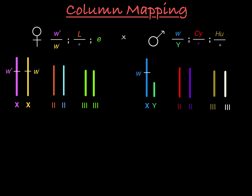We'll start by drawing the remaining chromosomes of our parent genotypes. One thing to note is that you want to include all the genes of interest on the chromosomes. For example, the female genotype does not mention the curly gene, but the male does. This means that the female is homozygous wild type at the curly gene. When we draw the female chromosomes, we want to have a placeholder for that gene on our chromosome.